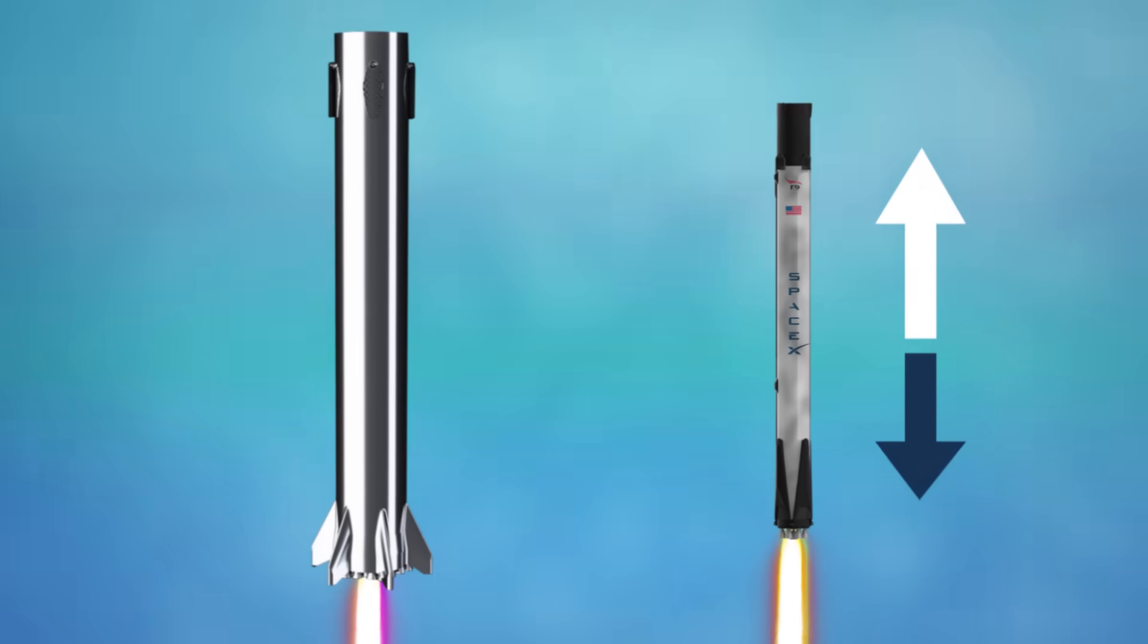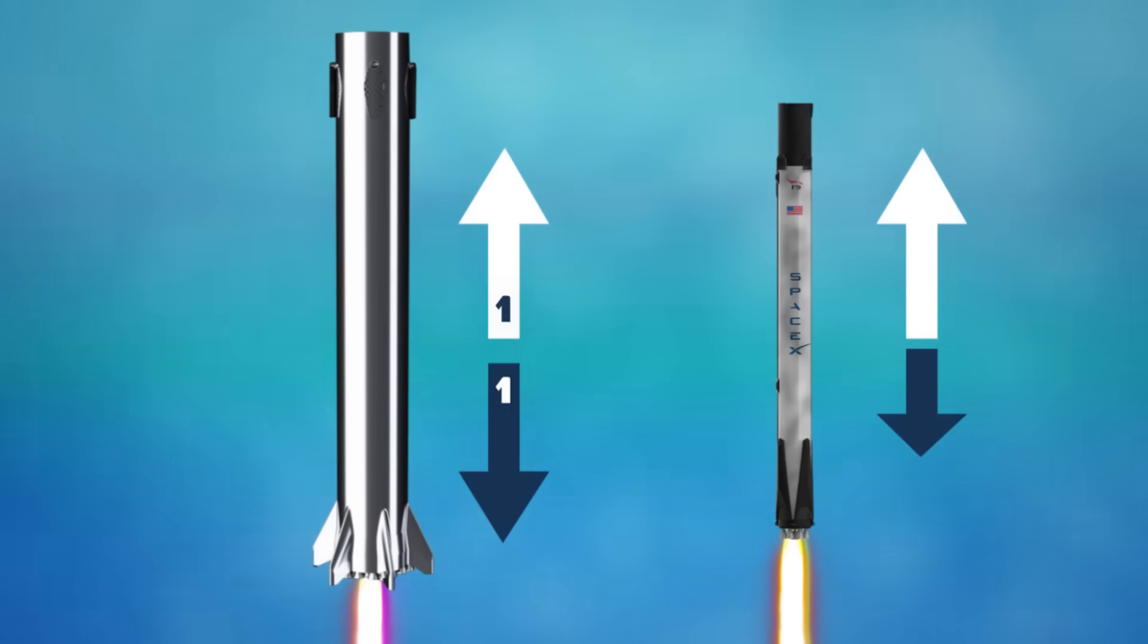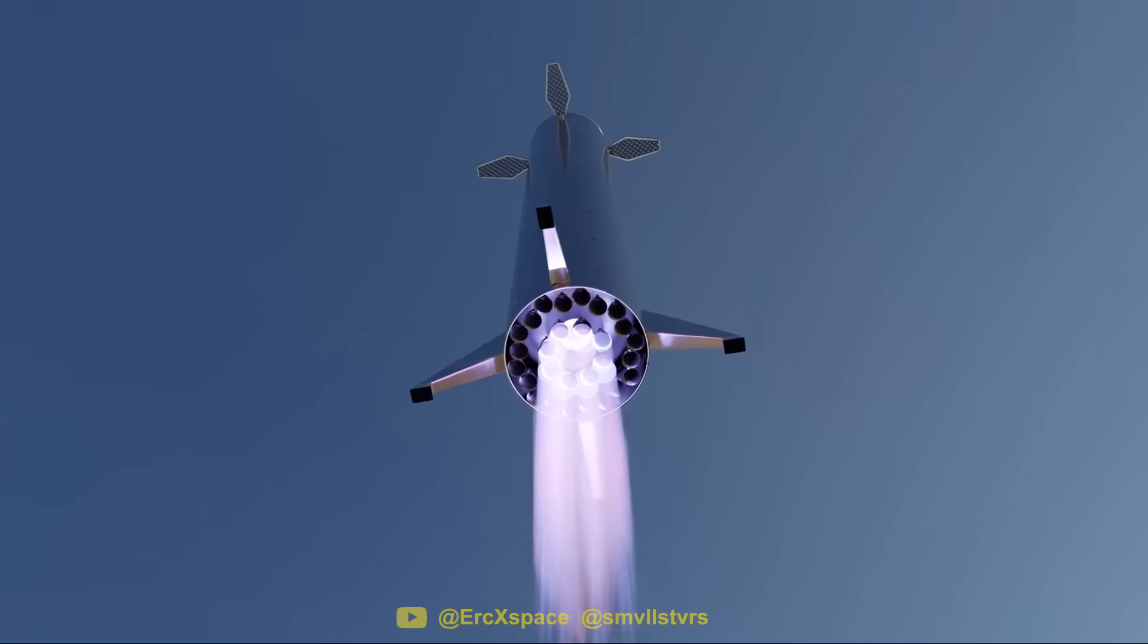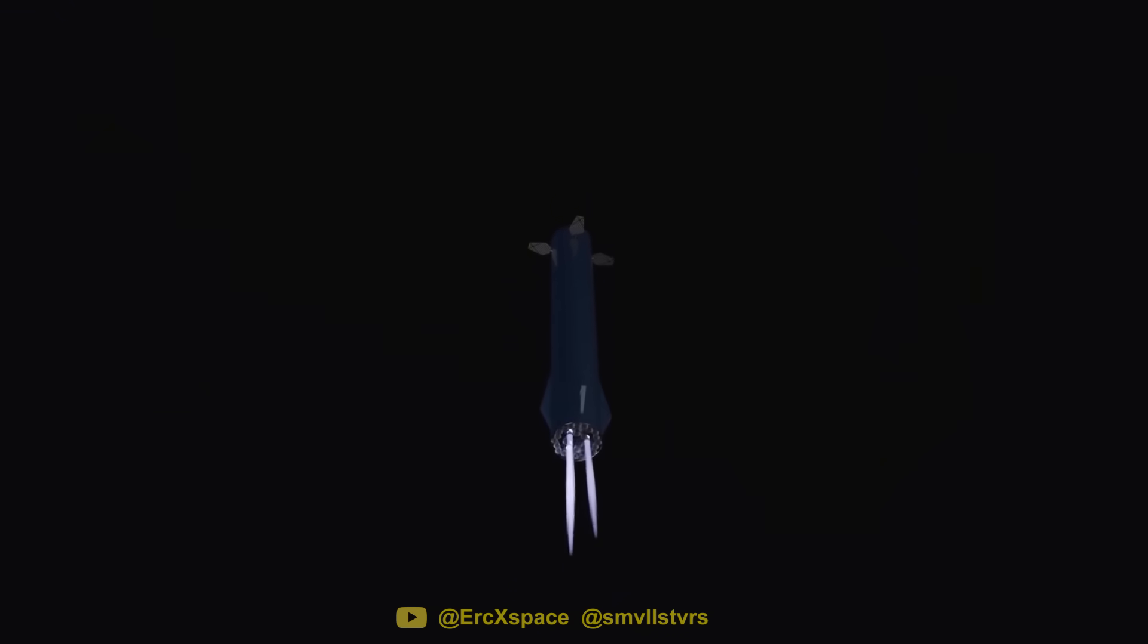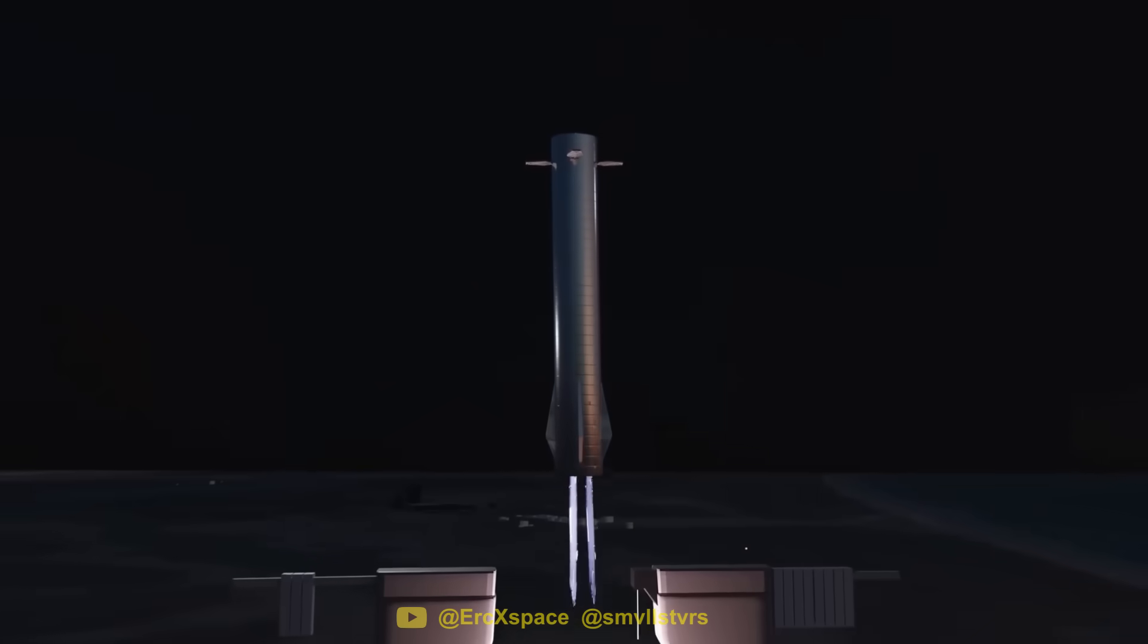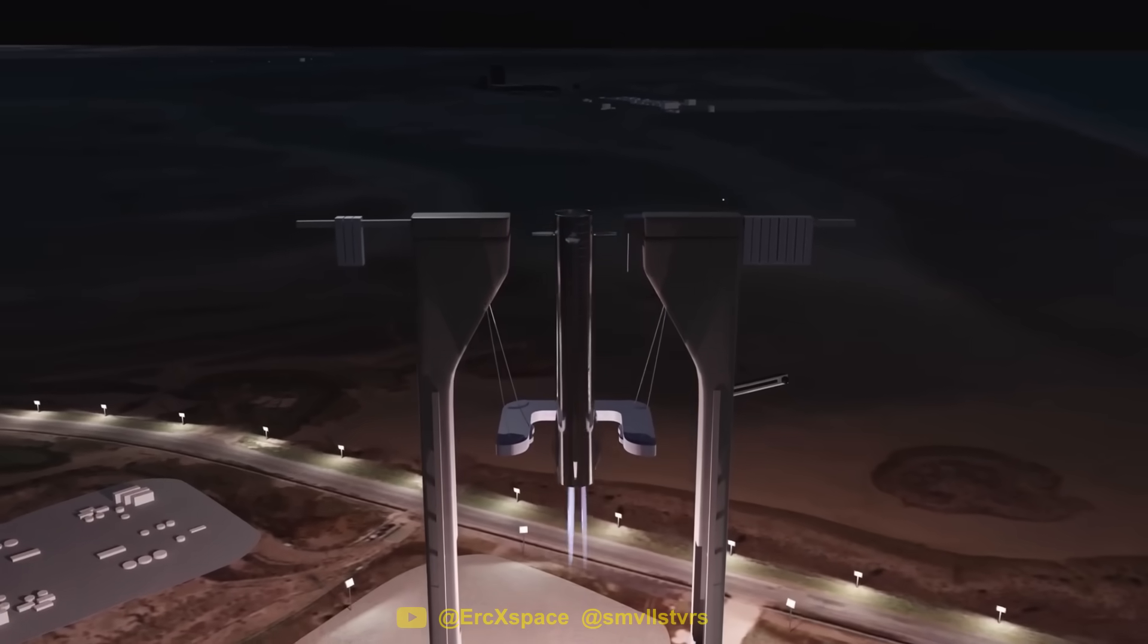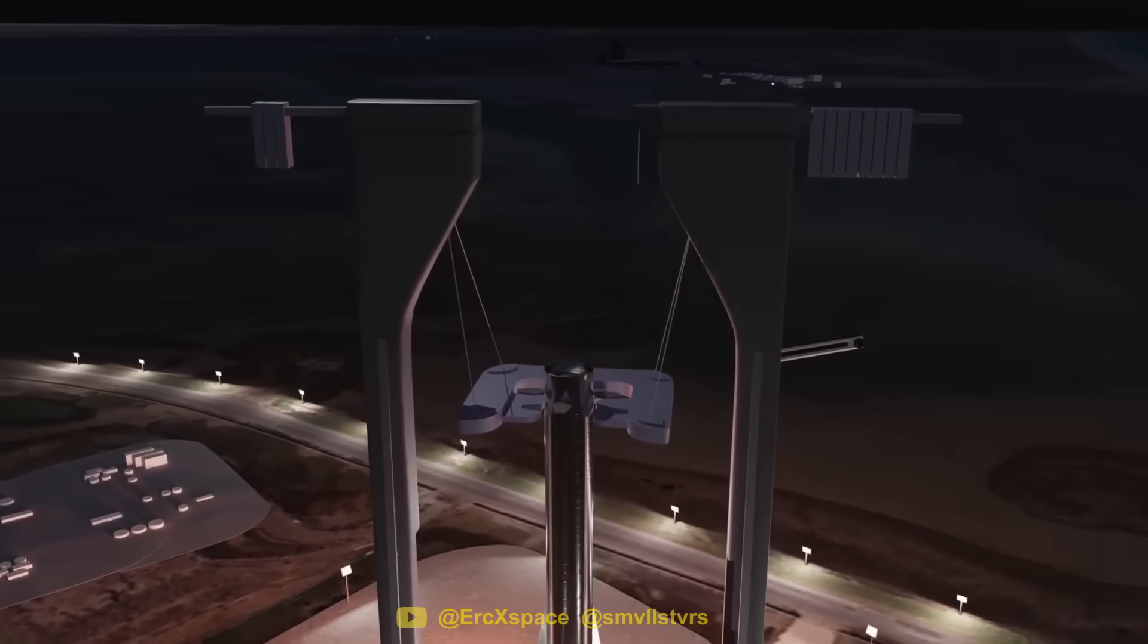Since Super Heavy has more engines than the Falcon 9, it can reduce its thrust to weight ratio to 1. This will allow it to hover over the pad and give it extra time to adjust its course. SpaceX will try to catch the booster on its final approach using a giant arm attached to the launch tower. As Super Heavy comes in to land, it will thread the needle between these catching arms until they retract inwards and lock into place.